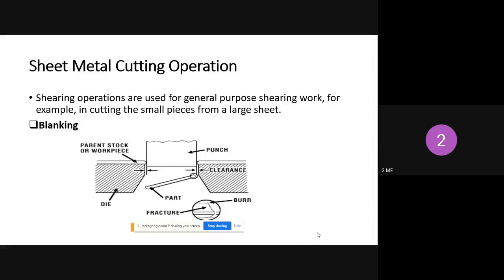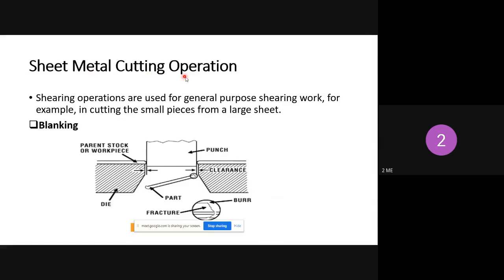Drawing operation uses punching pressure to draw the sheet metal and convert it into different shapes like a container or cup. Both tension and compression stresses are included during the drawing operation. So cutting, bending, and drawing are the three major operations of sheet metal. Now, the different sheet metal cutting operations: first is blanking — removing certain part of the work piece where the removed part is called as the useful work piece.